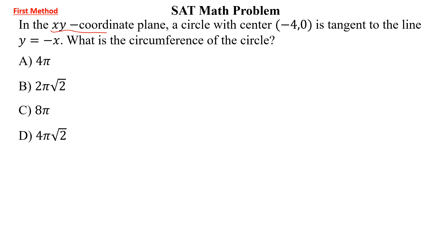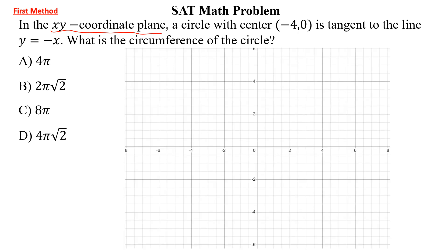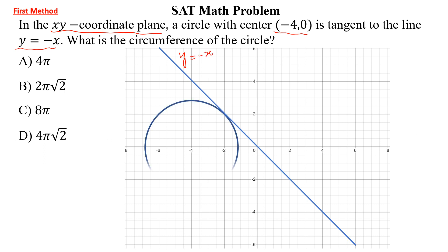In the xy coordinate plane, a circle with center (-4, 0) is tangent to the line y = -x. This is the line y = -x and this is the circle tangent to this line with center (-4, 0). What is the circumference of the circle?